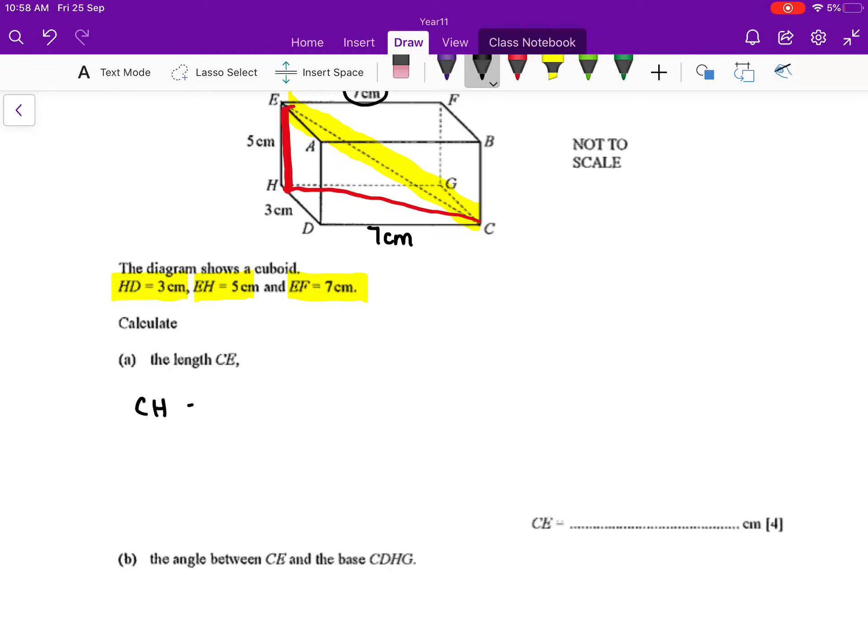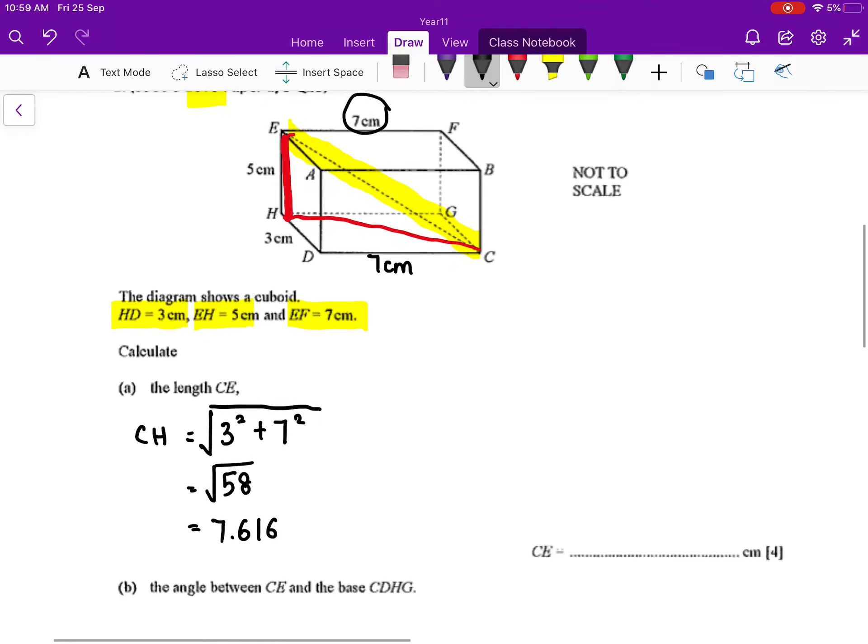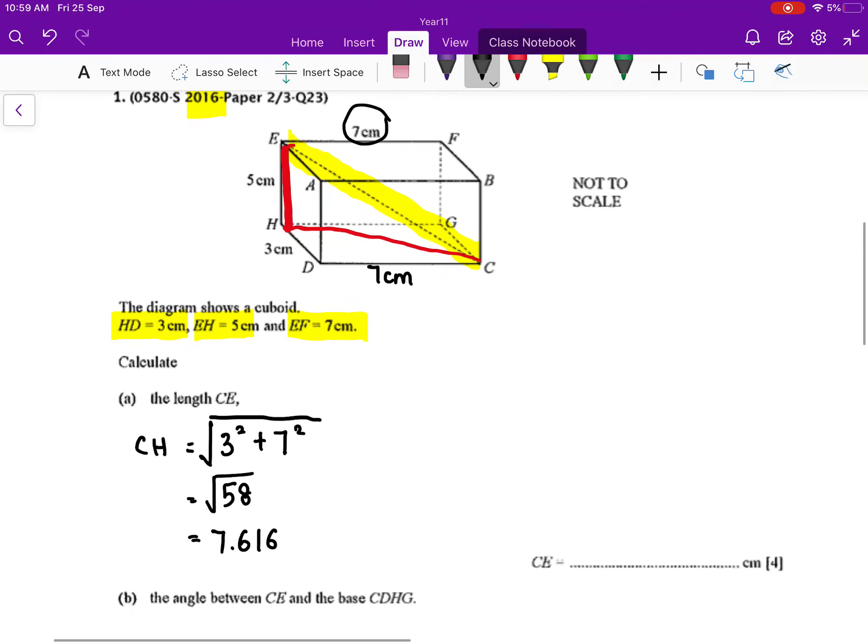So we are going to calculate your CH first. For you to get the length of CH, I'm going to use Pythagorean theorem formula where my 3 squared, I'm going to add on with my 7 squared. So that I have 9 plus 49, I got 58, and if you press your calculator you have 7.616. This is the length of CH.